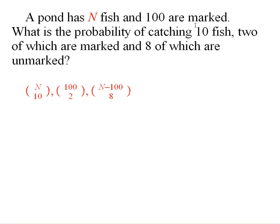So we want to figure out this probability. Well, there's this number of ways of getting 10 fish. There's this number of ways of getting two marked fish, because you have 100 to choose from, and you want the number of ways of picking two of those.